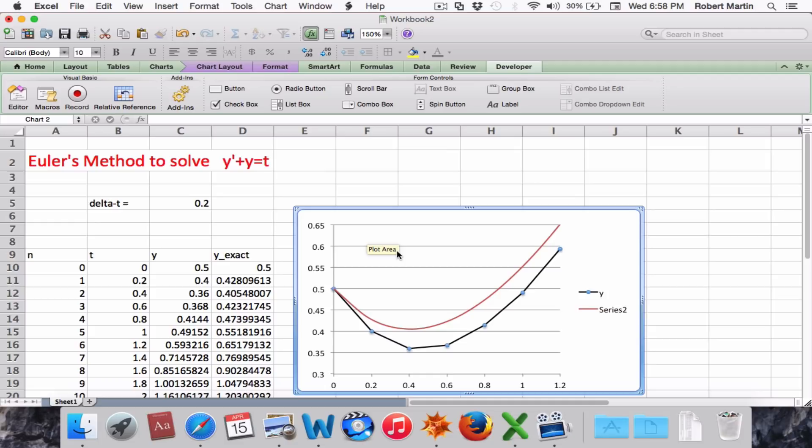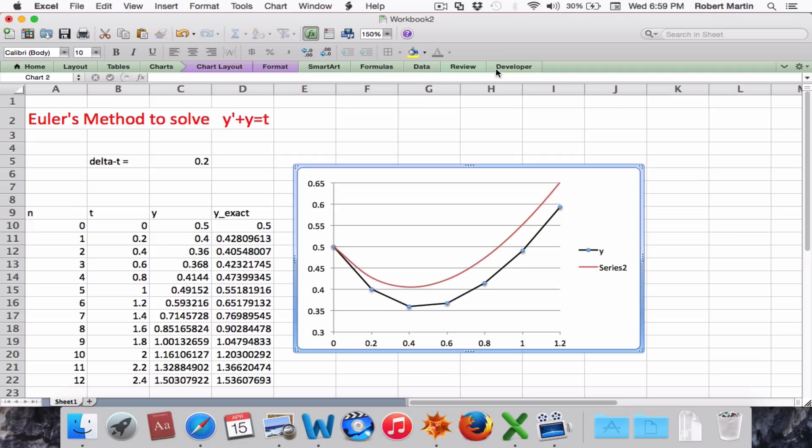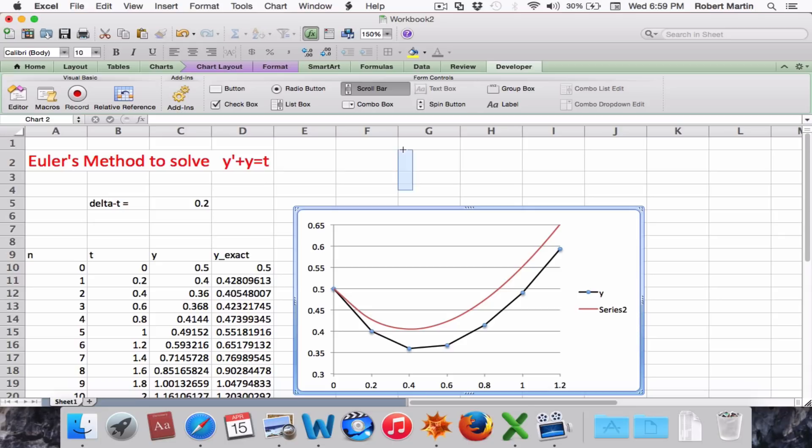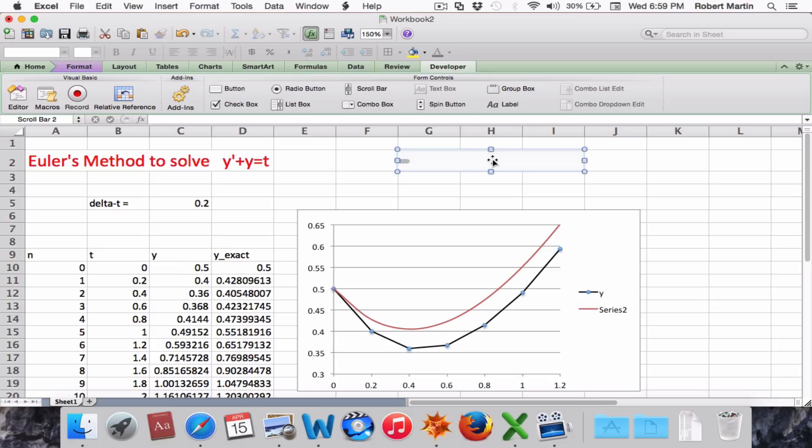Finally, I'd like to demonstrate how our solution changes with different delta t values. And to accomplish this, I'm going to introduce a scroll bar into the notebook. This is done by selecting the developer tab above and selecting scroll bar, pulling it down, creating a scroll bar like so. Right-click inside the scroll bar and choose format control.